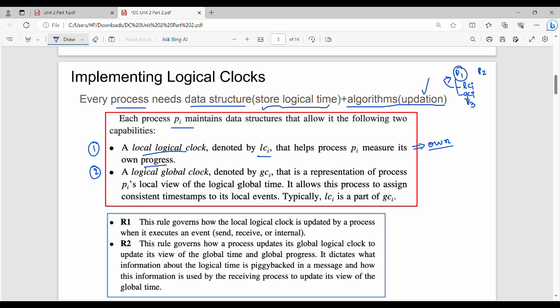Three processes show overall global logical time. The process view using GC_i. Simple: LC_i is own logical time, GC_i is the process view of logical global time. These two maintain the capability.